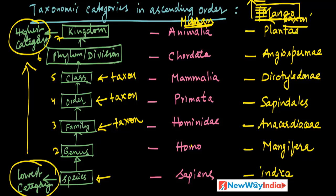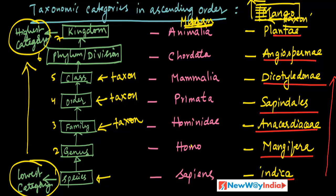One more example — mango. Mango belongs to kingdom Plantae, phylum Angiospermae, class Dicotyledonae, order Sapindales, family Anacardiaceae, genus Mangifera, species indica. So the scientific name is Mangifera indica, which comes under family Anacardiaceae, order Sapindales, class Dicotyledonae, division Angiospermae, kingdom Plantae.